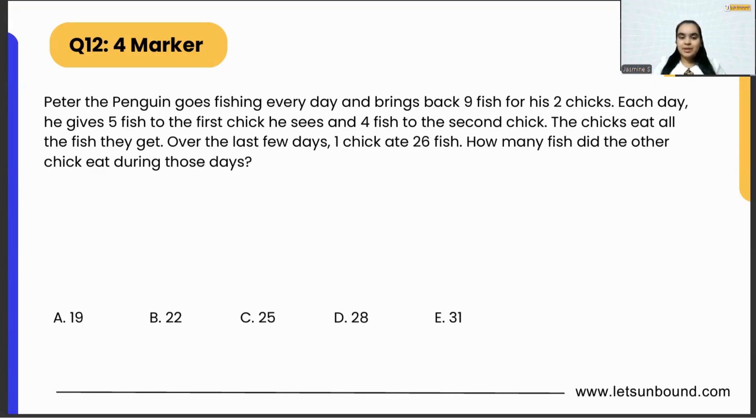Peter the Penguin goes fishing every day and brings back nine fish for his two chicks. Each day he gives five fish to the first chick he sees and four fish to the second chick. The chicks eat all the fish they get. Over the last few days, one chick ate 26 fish.